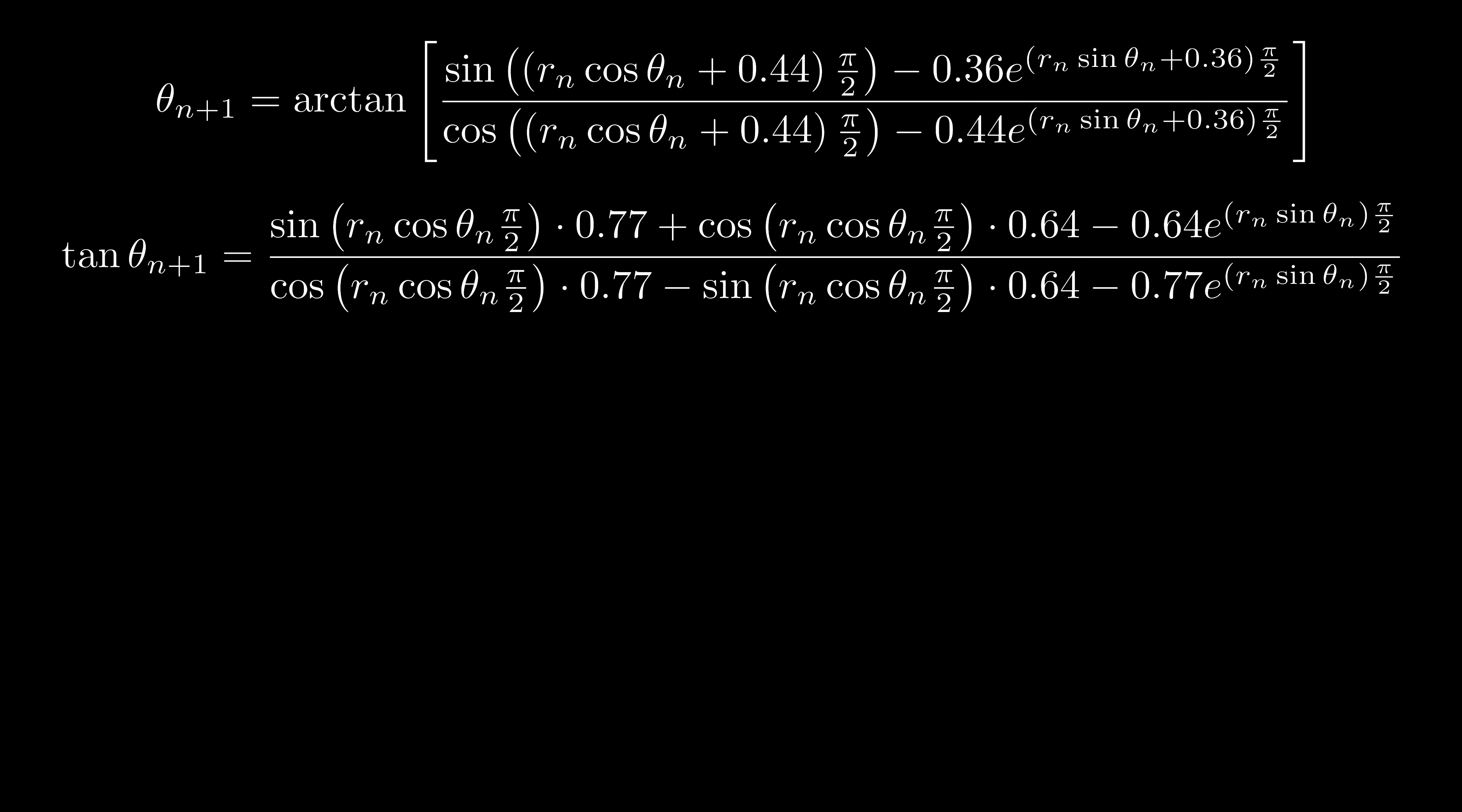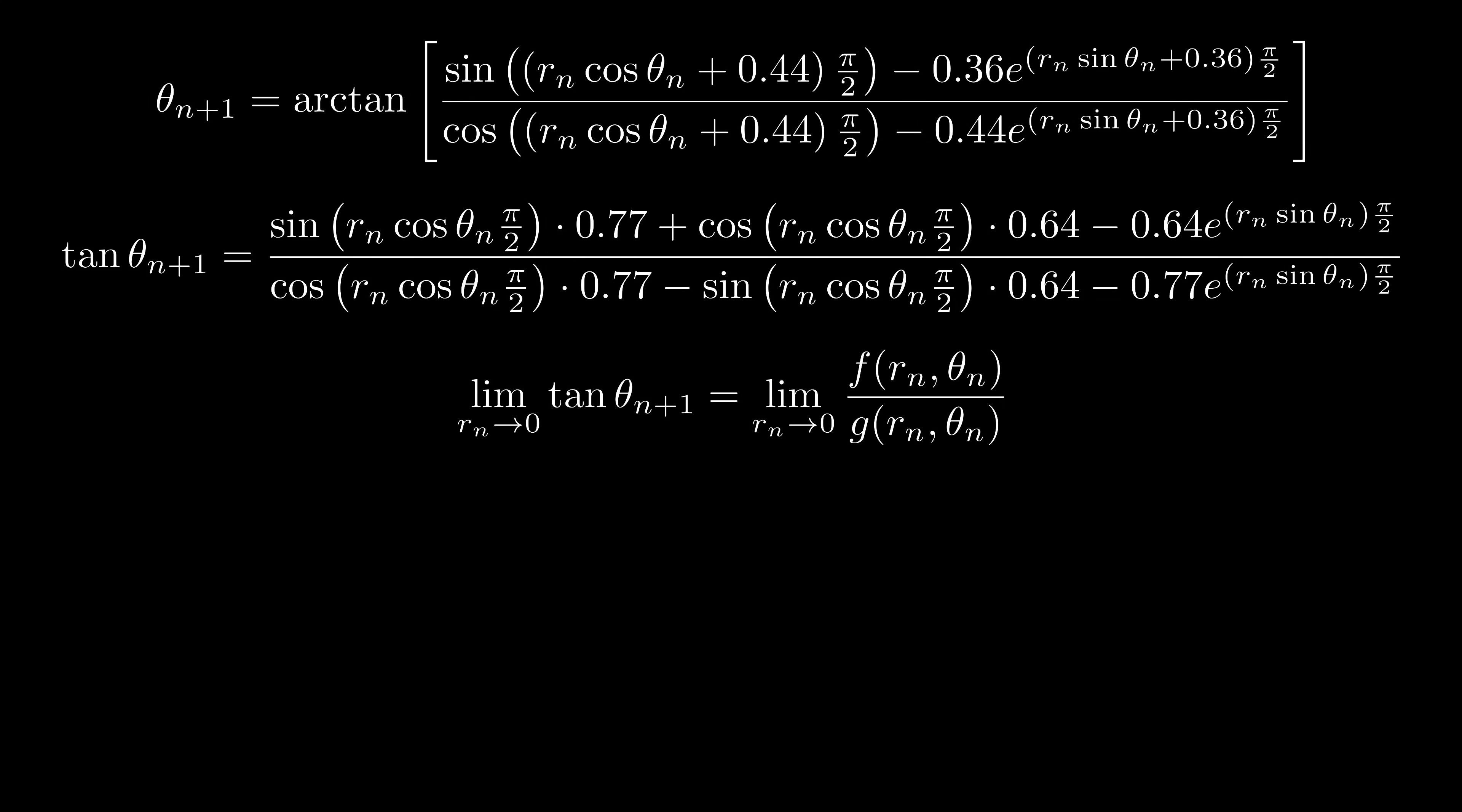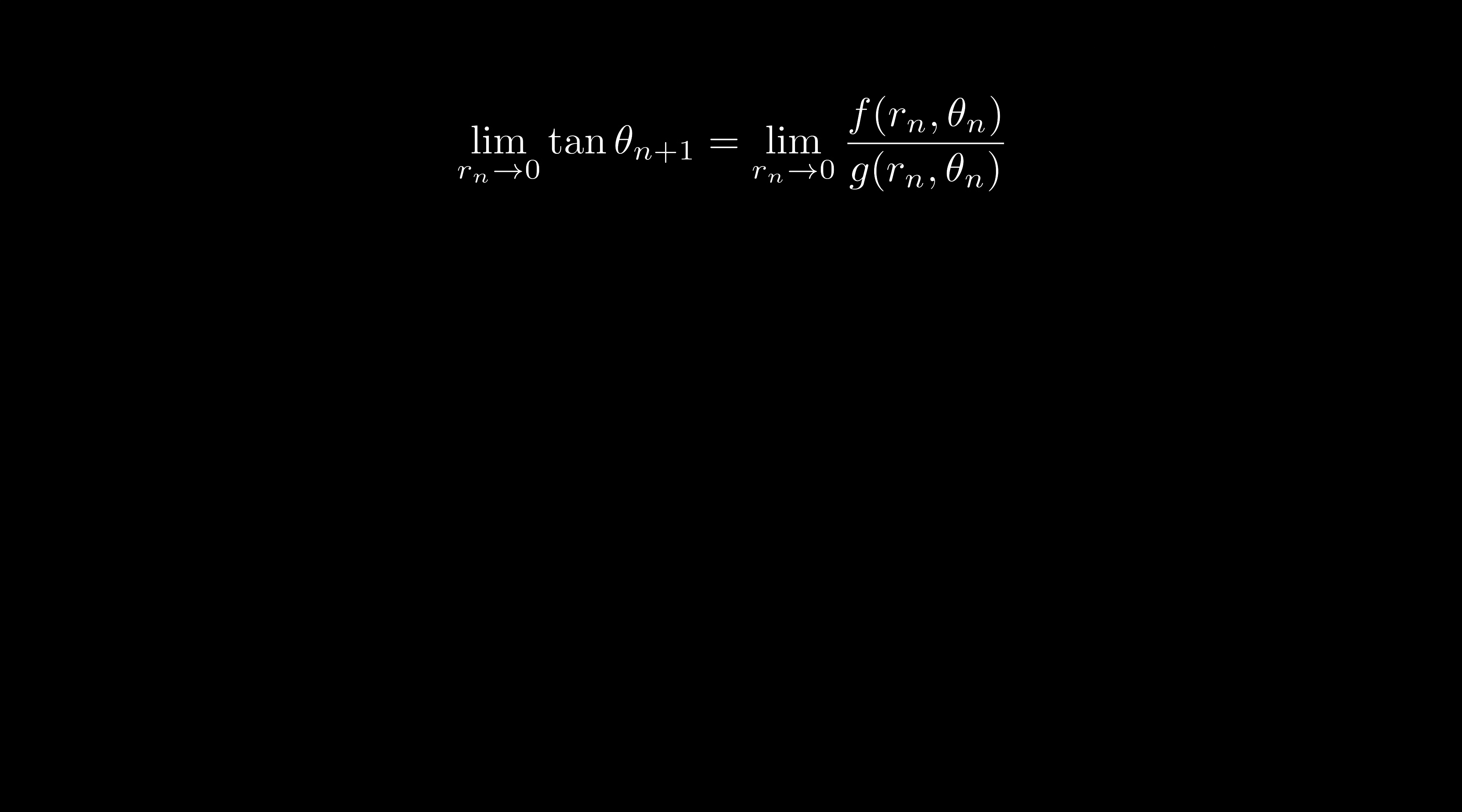Let's simplify it. First, let's take tangent on both sides. Then we send Rn to 0. We can do this because we observe that when Rn goes to 0, the theta difference seems maintained. I'm also using f and g to represent the numerator and the denominator to avoid overcrowding the screen.